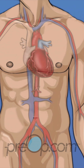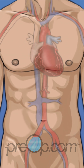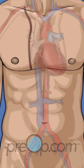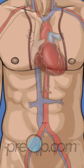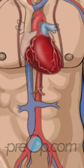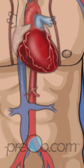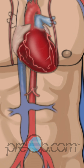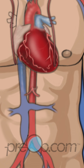These transplanted vessels are called grafts. The right and left internal thoracic arteries are also commonly used as grafts. These arteries naturally pass close to the heart. When creating a bypass with one of these vessels, often only one end of the vessel is moved to the coronary artery, past the blockage.